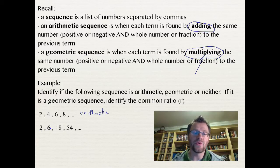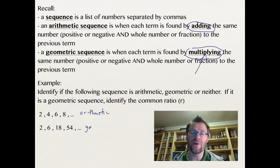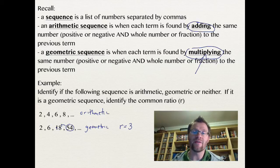Second one, 2, 6, 18, 54. Well, you can see that we're multiplying by 3 each time. So this is geometric. And that means that our ratio, our common ratio, or r, is actually 3. Now, the way that you can find that is just by taking any term and dividing it by the previous term. So 54 divided by 18 will give you 3. 18 divided by 6 will give you 3. 6 divided by 2 will give you 3.